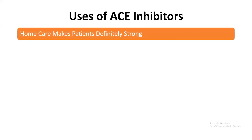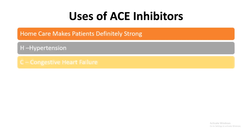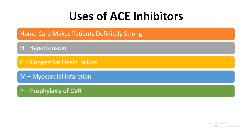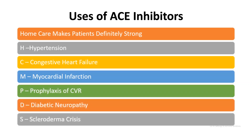The uses of ACE inhibitors can be remembered as: 'Home care makes the patients definitely strong.' Take the first letter of every word — H for hypertension, C for congestive heart failure, M for myocardial infarction, P for prophylaxis of cardiovascular risk, D for diabetic nephropathy, and S for scleroderma crisis.